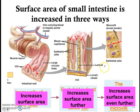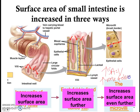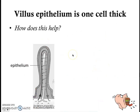In your test paper, please write that it increases the surface area to volume ratio of the small intestine, and that's why it can increase the rate of absorption. The second way in which the small intestine is adapted for absorption is that the epithelium — this layer of cells on the outside of the villus — is only one cell thick.